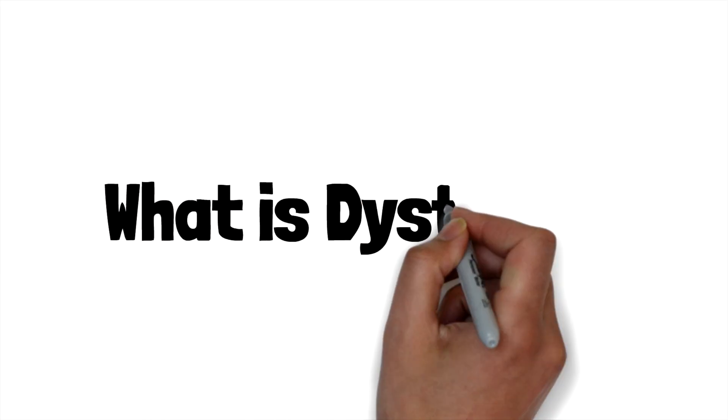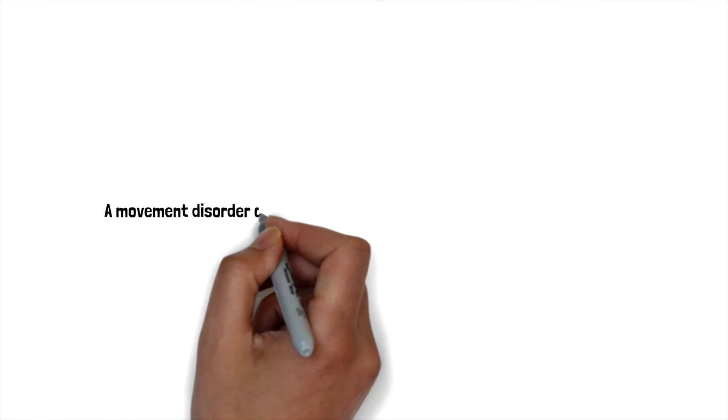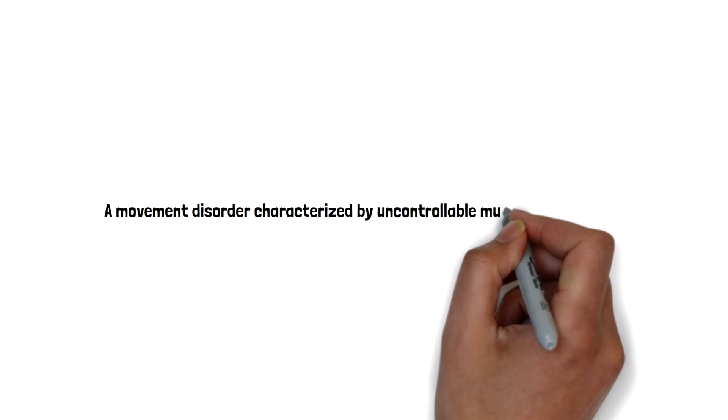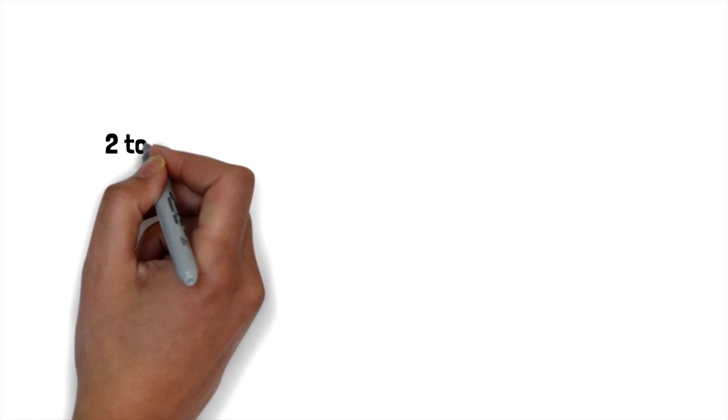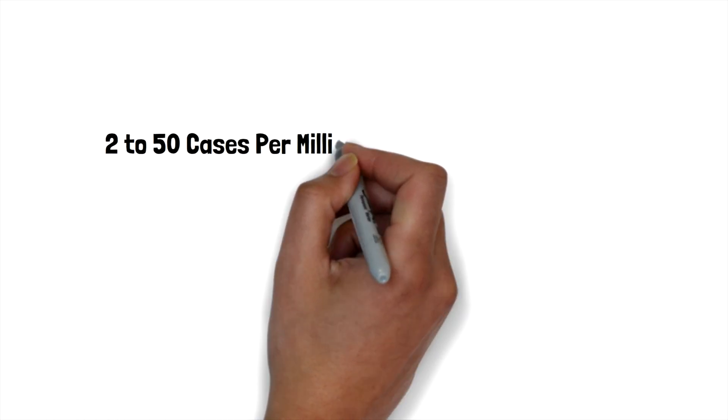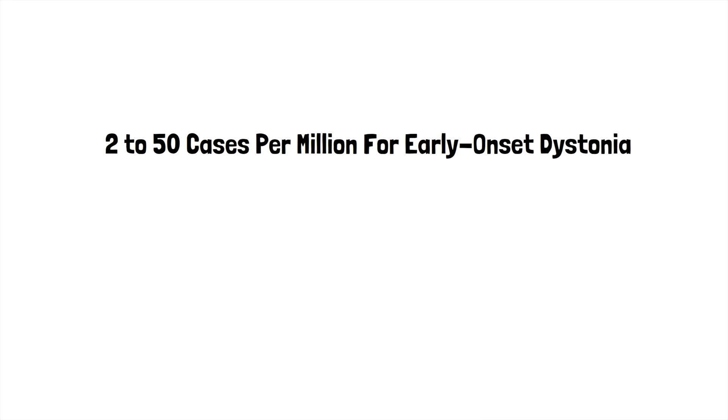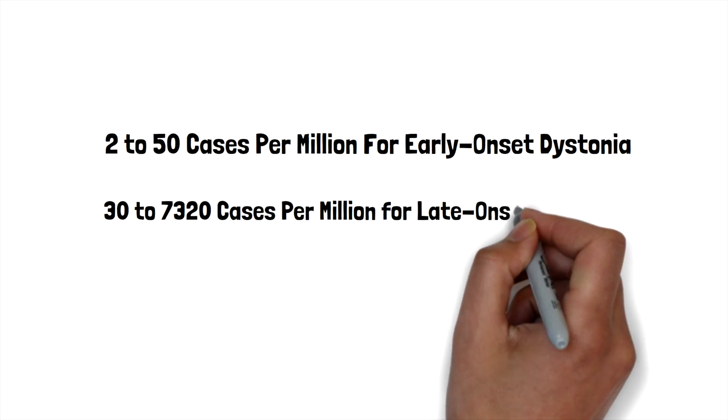What is dystonia? Dystonia is a specific movement disorder that is characterized by either intermittent or sustained muscle contractions that induce atypical movements, postures, or tremors that are usually repetitive. Dystonia affects 2 to 50 cases per million for early onset dystonia and 30 to 7,320 cases per million for late onset dystonia.